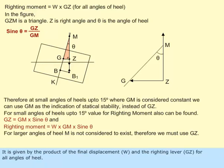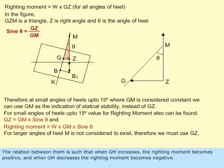The righting moment is given by the product of the final displacement W and the righting lever GZ for all angles of heel. The relation between them is such that when GM increases, the righting moment becomes positive, and when GM decreases, the righting moment becomes negative.